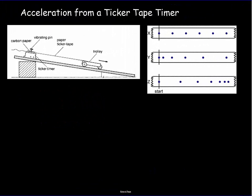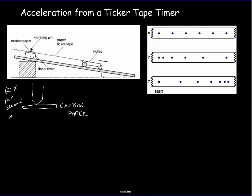Experimentally, there are different ways to measure acceleration. One way is with a ticker tape timer — essentially a screw that goes up and down 60 times per second, hitting a piece of carbon paper and leaving a mark on a paper ribbon. If we attach the ribbon to a cart and pull it through, we get a series of dots. If the dots are equally spaced, the cart is moving at constant speed — uniform motion — because the time between dots is always 1/60th of a second.